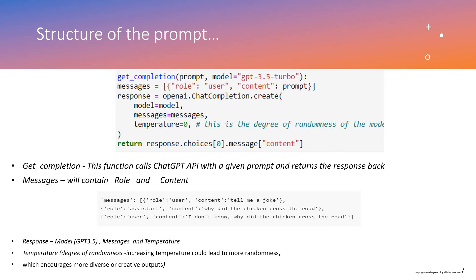The structure of the prompt is very interesting. The get_completion function calls the ChatGPT API with a given prompt and returns the response. We pass prompt and model as arguments. The messages parameter contains the role and the content. The role can be user, assistant, or anything else. The content is nothing but the prompt itself — things like 'Tell me a joke,' 'What is the score of India yesterday?' or 'Will India win tomorrow?' — these are the content, which is the prompt.